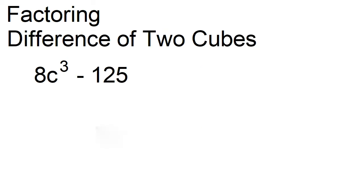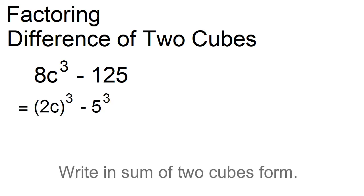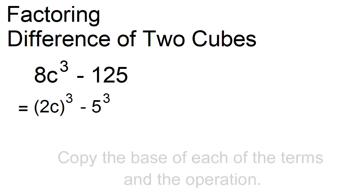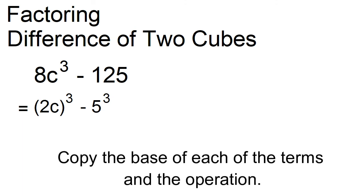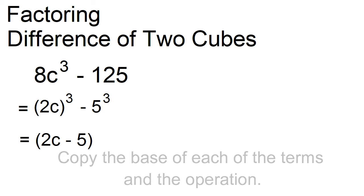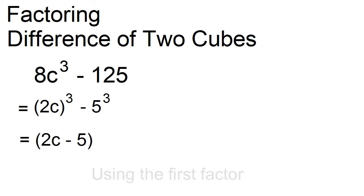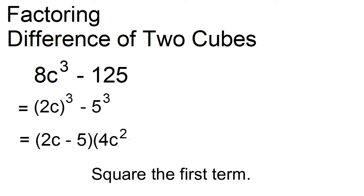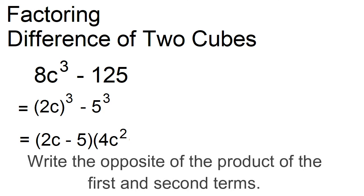Factor 8c cubed minus 125b cubed. This can be written as the cube of the quantity 2c minus 5 cubed. The factors are 2c minus 5 and 4c squared plus 10c plus 25.